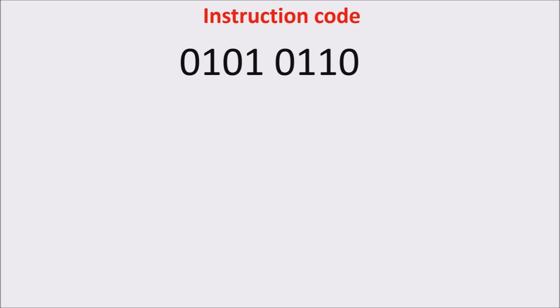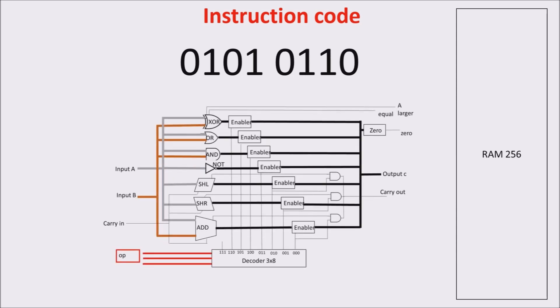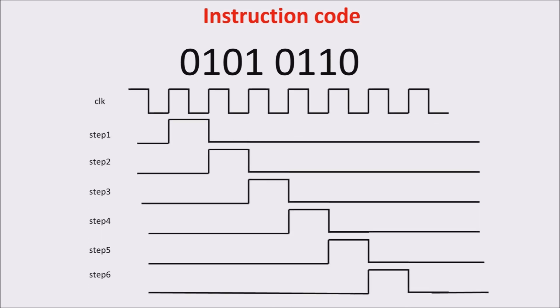We have already built some important components of the Scott CPU: the RAM memory, the ALU, and we are building the control unit. At the heart of the control unit is the stepper, which gives the right sequence to all operations. As seen in previous videos, there are six steps. In the first three steps we put the instruction address on the bus, increment it by 1, and fetch the instruction into the instruction register. In steps 4, 5, and 6, we execute the instruction.